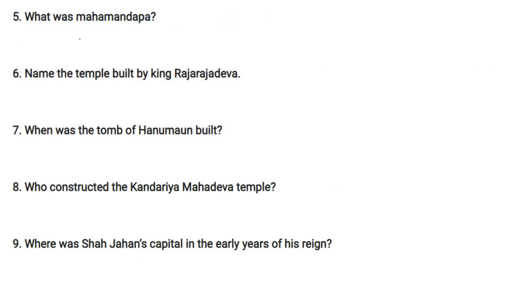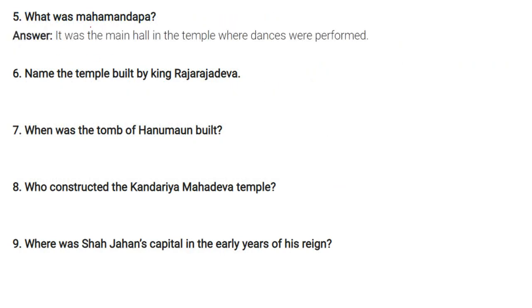Mahamandapa was the main hall in a temple where dances were performed. The temple built by King Raja Raja Deva is the Raja Rajeshwara temple.